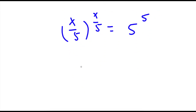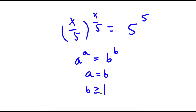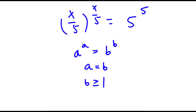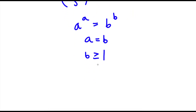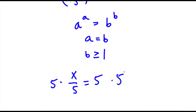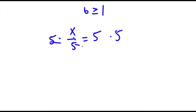Now, if I have something in the form a to the power of a is equal to b to the power of b, this means that a is equal to b, as long as b is greater than or equal to 1. In this case, b is 5, which is greater than or equal to 1, meaning a is equal to b. So a is x over 5 and b is 5, giving us x over 5 is equal to 5. Now, to simplify this, I'm going to multiply both sides by 5, so x is equal to 5 times 5, which is 25.